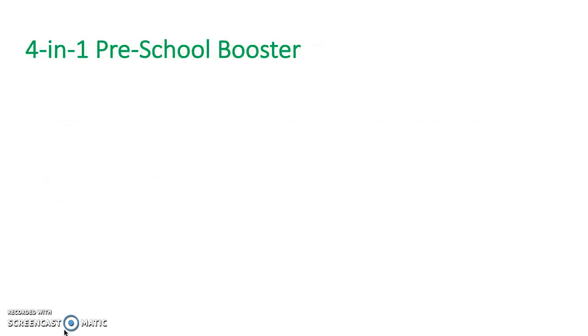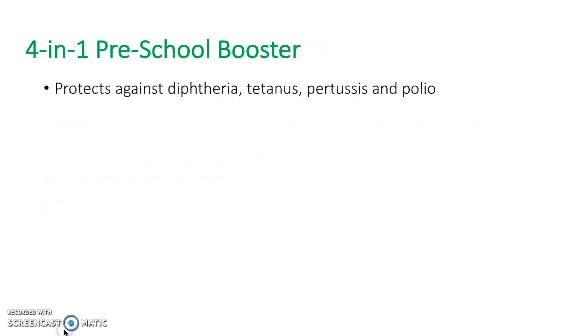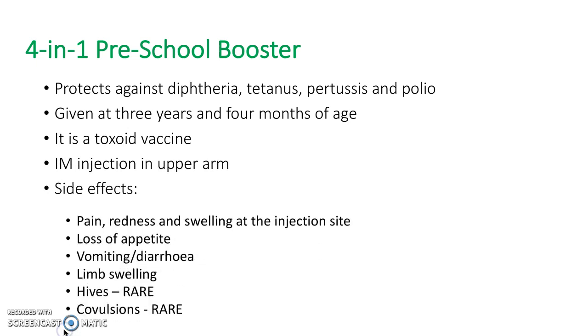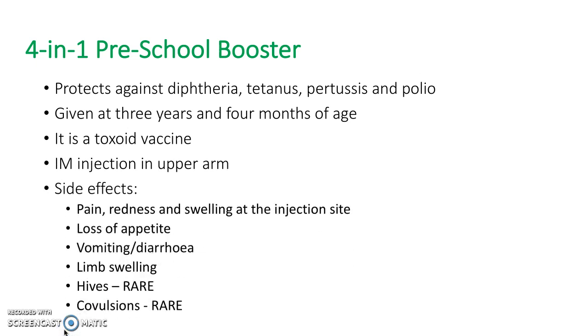The preschool booster vaccine is given at 3 years and 4 months of age. It provides protection against diphtheria, tetanus, pertussis and polio. Pertussis is also known as whooping cough.